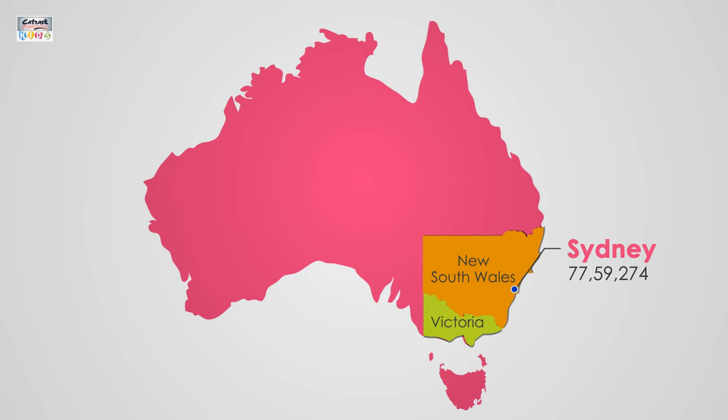Victoria: the capital of Victoria is Melbourne. It has the population of 6,179,249.